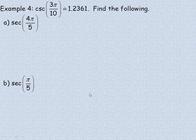In example 4, we're given that the cosecant of 3 pi over 10 is equal to approximately 1.2361. We're asked to find two secant quantities. Remember, cosecant and secant are related by those cofunction identities.